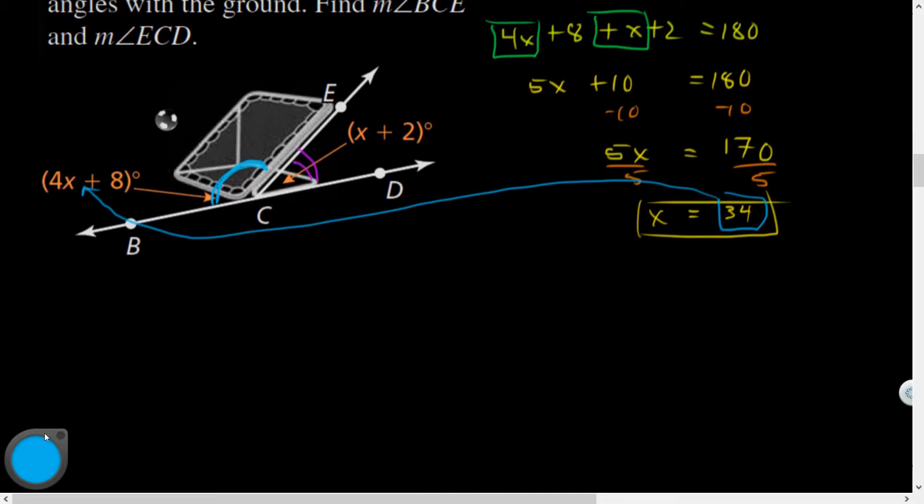So, let's see. Measure of angle BCE. Measure of angle BCE. It's going to equal 4 times 34 plus 8. So what's that going to be? 120 plus 16. 136 plus 8. So that's 144 degrees.